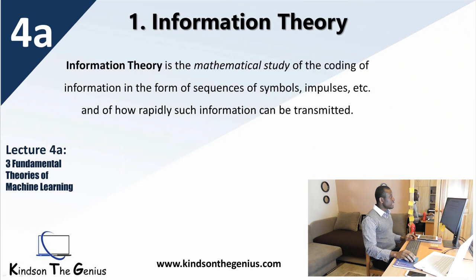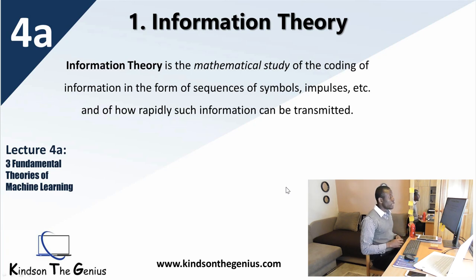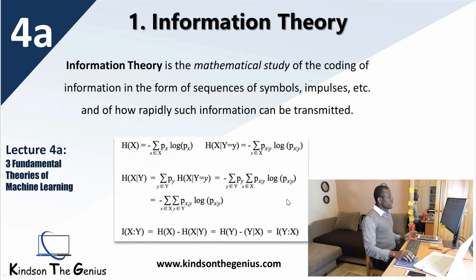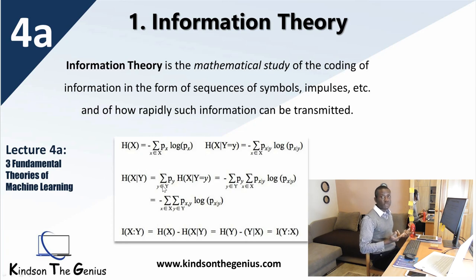The last building block, the third theory, is information theory. This is actually the one that is a bit challenging to learn, but we are going to go through it. It is a mathematical study of coding of information in the form of sequences of symbols and impulses or other things. It simply has to do with how to represent information using symbols. For instance, when you say f(x) = 2x + 1, you are actually using information theory — you are codifying information using a set of symbols, which includes algebra.